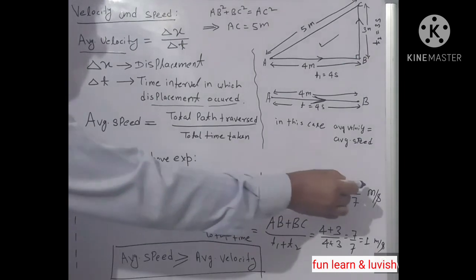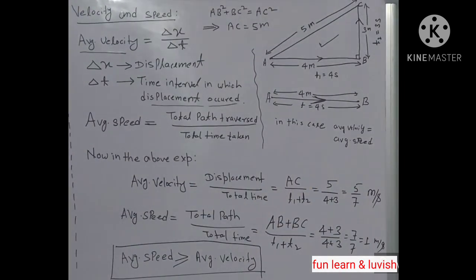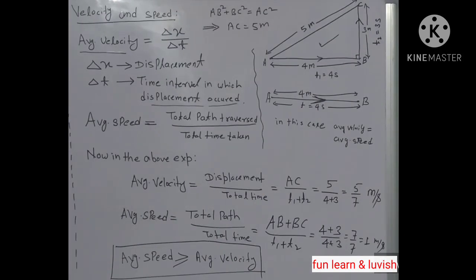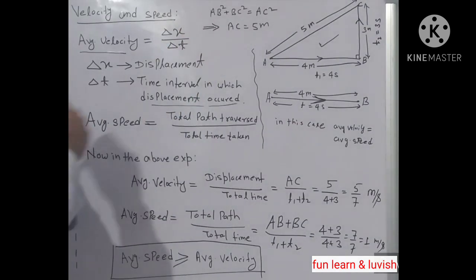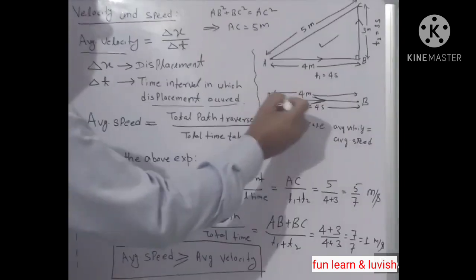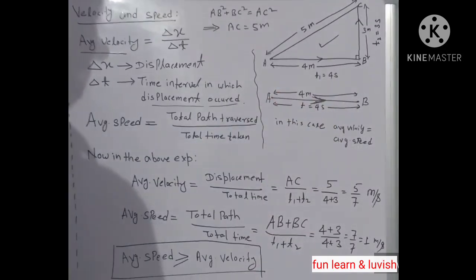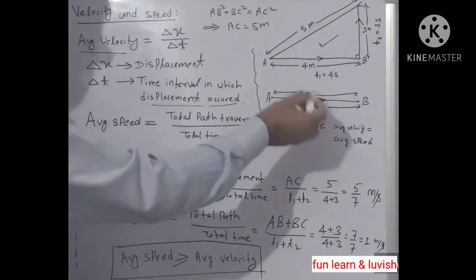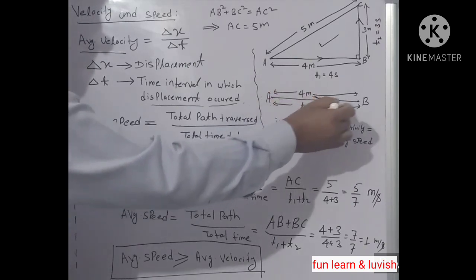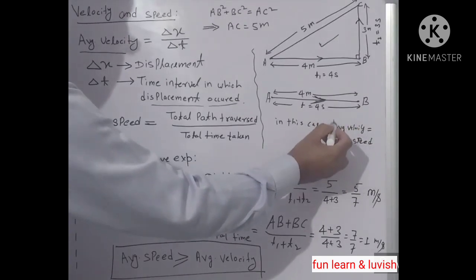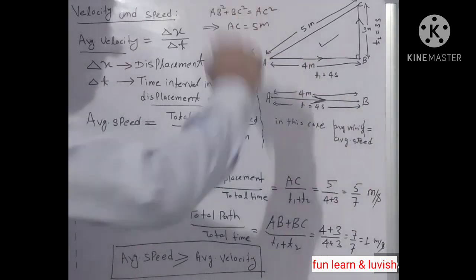Obviously, here average velocity is less than average speed. So in general, average speed is always greater than or equal to average velocity. Now suppose motion in a straight line in only one direction — an object moves from A to B. In this case, average speed is 4 by 4 = 1 meter per second, and average velocity is also 4 by 4 = 1 meter per second. So in one-dimensional motion, magnitude of average velocity equals average speed.